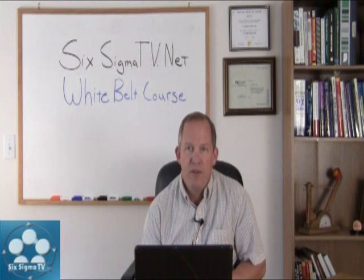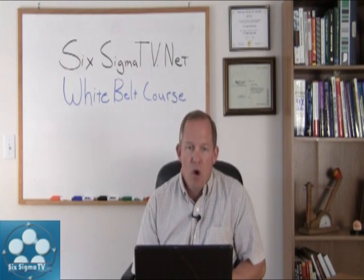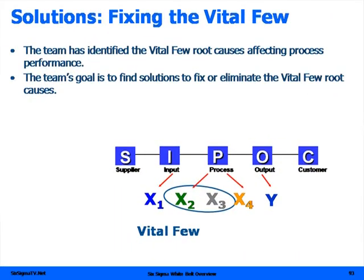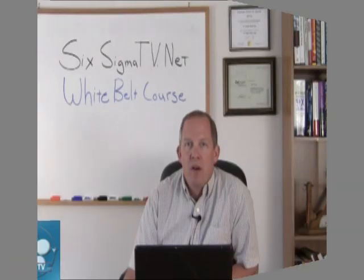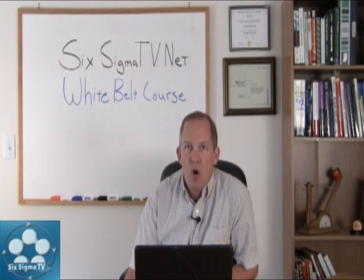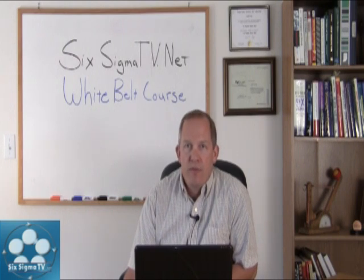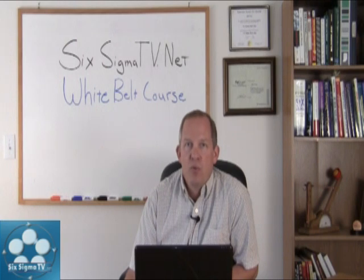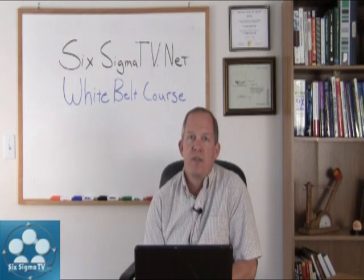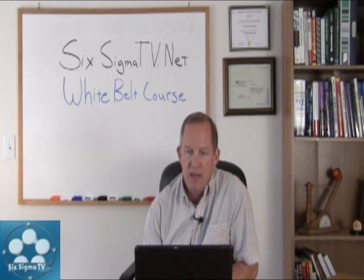The deliverable is a validated solution or solutions — fixing the vital few. Just like the vital X's, we're going to look at what are the vital few root causes that have the biggest impact on our process and prioritize those. We can't always fix everything at once, so we might be doing a multi-generational project plan. In the spirit of continuous improvement, we want to prioritize those root causes and take care of the issues that are really causing problems within our process.